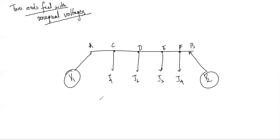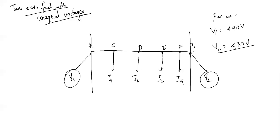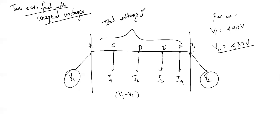For example, V1 might be 440 V DC and V2 might be 430 V DC. The total voltage drop across distributor AB equals V1 minus V2. The same procedure carried out for equal level voltages can be retained for unequal level of voltages as well.